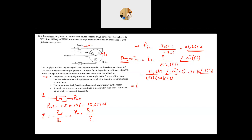Since the system is balanced, the magnitude is the same for all phases. Phase B has a −120° phase shift from phase A, and phase C has a +120° (or −240°) shift. Therefore, the phase B current is 75.88 ∠−156.9° A. That is the answer to the first requirement.